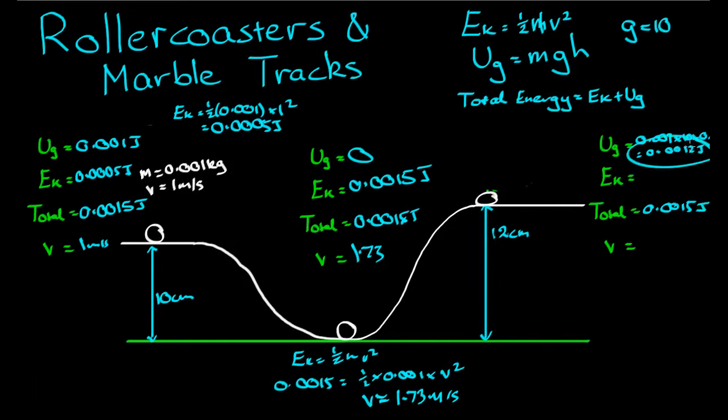So 0.0015 take away 0.0012 is equal to 0.0003 joules. And from this kinetic energy, we can figure out the velocity. So 0.0003 is equal to 1 half times 0.001 times v squared. So 0.0003 divided by 0.5 divided by 0.001 is 0.6 taken to the square root. And I get v is equal to 0.77 meters per second.